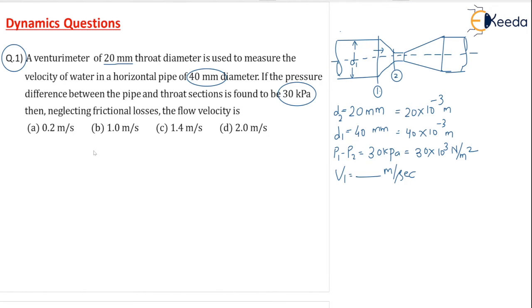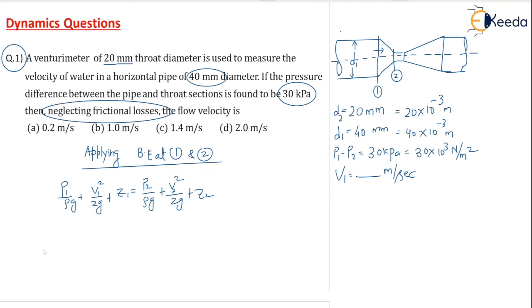Solution is applying Bernoulli's equation at the two points. Applying Bernoulli's equation at 1 and 2, what you can write? P1/ρg + V1²/2g + Z1 = P2/ρg + V2²/2g + Z2. This is for ideal because no losses are mentioned here. You can see neglecting frictional losses. So no losses. I have written for the ideal case.